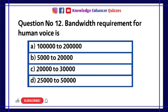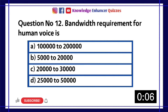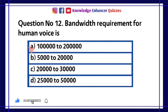Question number 12. Bandwidth requirement for human voice is. A 1 lakh to 2 lakh. B 5,000 to 20,000. C 20,000 to 30,000. D 25,000 to 50,000. Option A is the right answer.